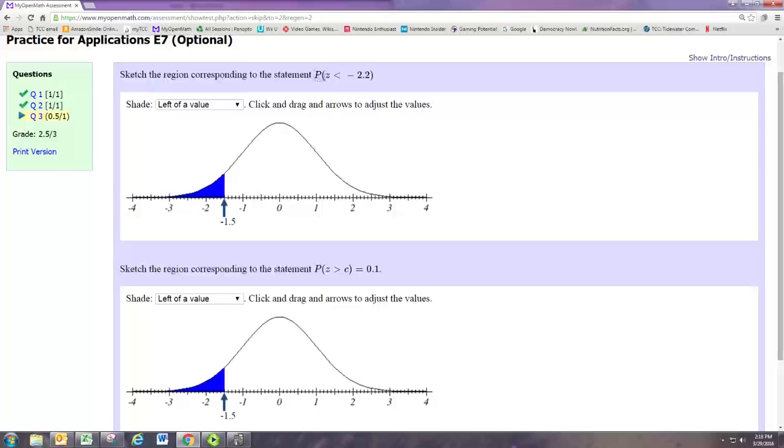We want to show a picture of the probability that the random variable is less than negative 2.2. So we set the arrow to negative 2.2 and we shade to the left, then the shaded area represents the probability that the random variable is less than negative 2.2.